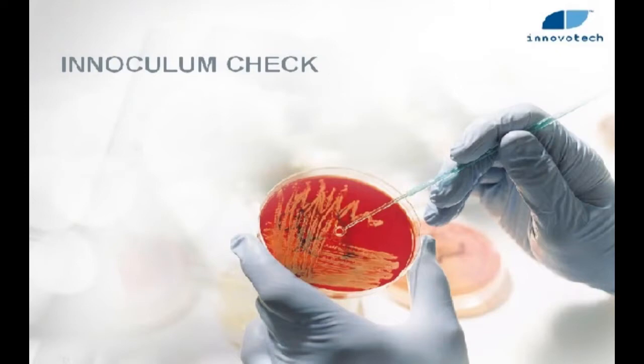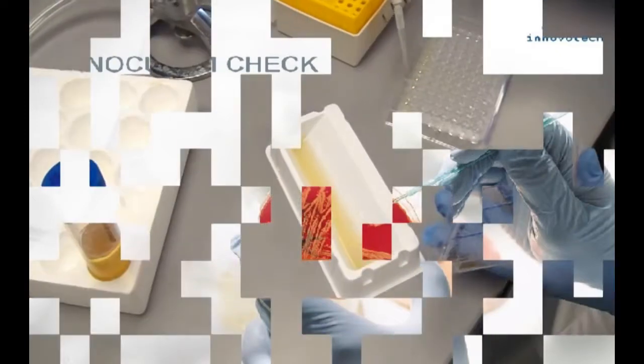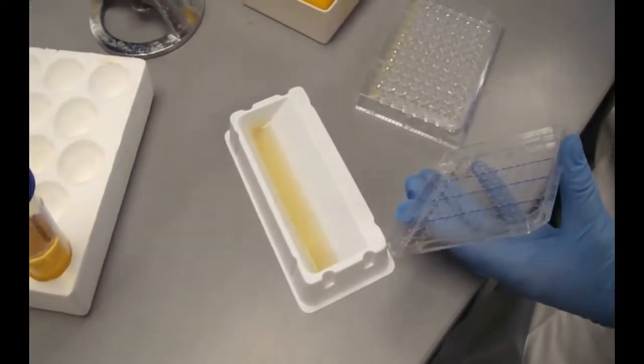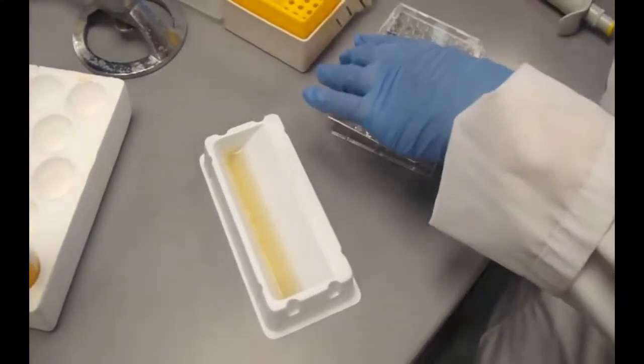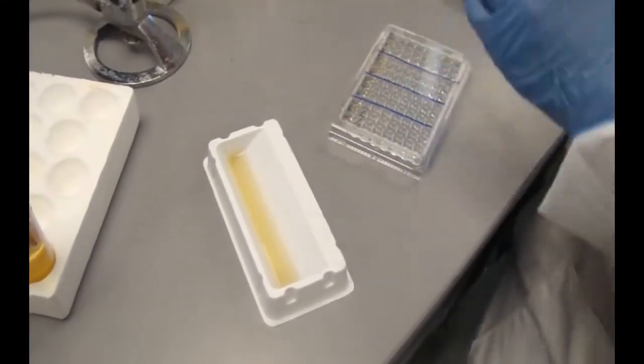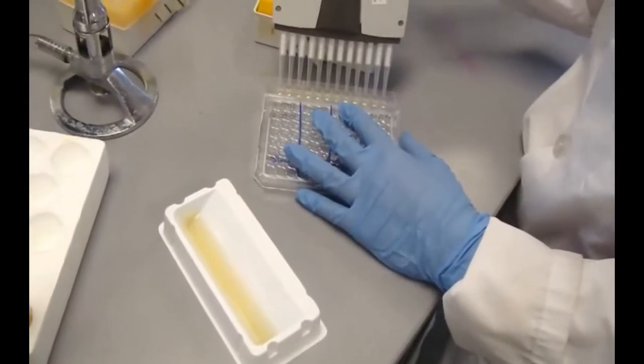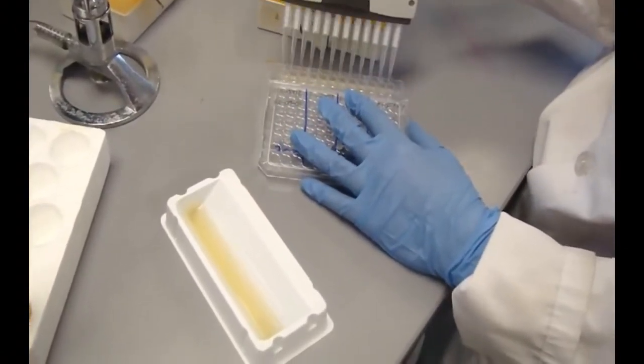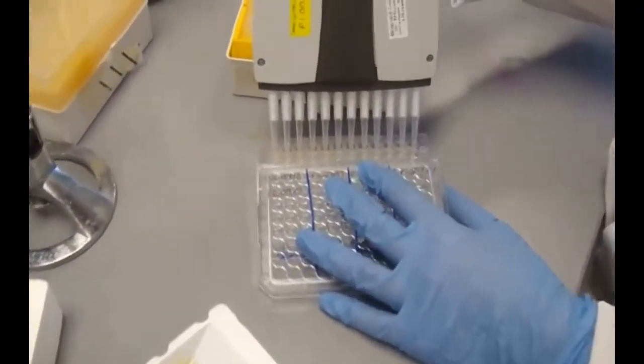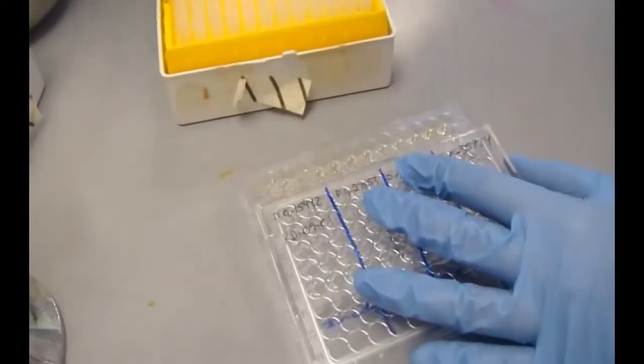The cell density is confirmed by serially diluting and spot plating the inoculum. A serial dilution 10^0 to 10^-7 is prepared by transferring 20 microliters down each of the 8 rows.